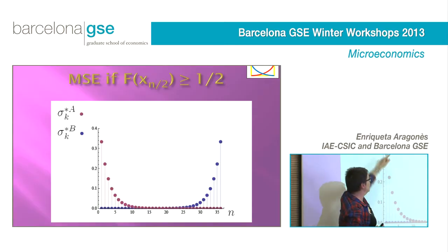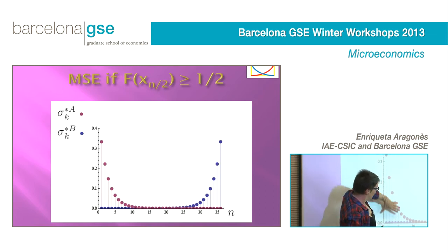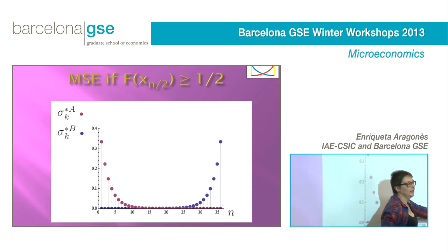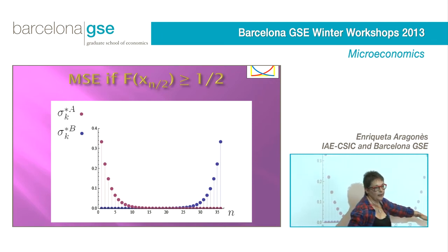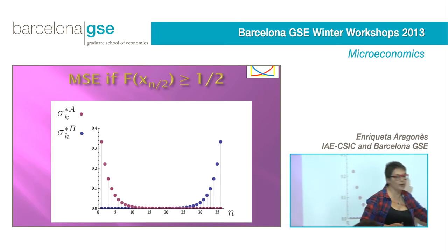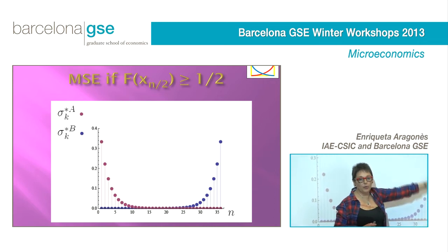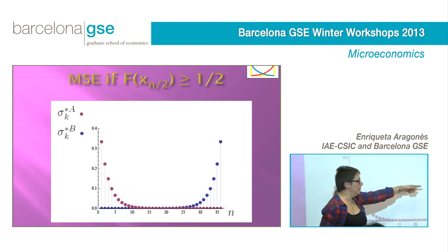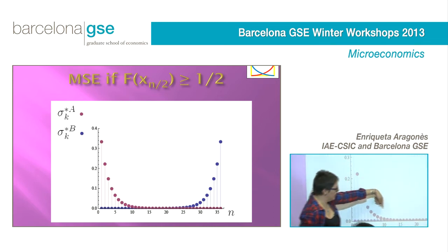The advantaged candidate puts a lot of probability on policies close to zero and less and less probability as policies move away from zero. The disadvantaged candidate puts a lot of probability on policies close to one and less and less probability on policies far away from one.